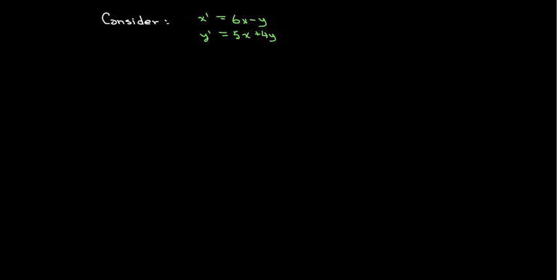So consider this linear system of differential equations, which in matrix form, we can write as vector x prime equals the matrix 6, negative 1, 5, 4, times the vector x.